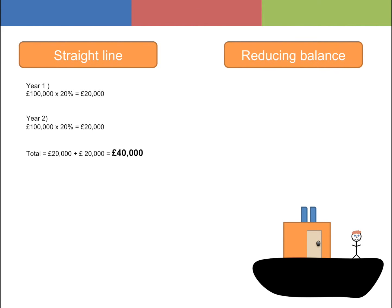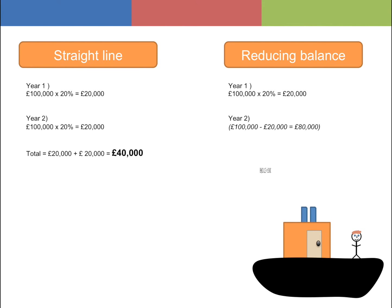However, for the reducing balance method, for the second year you would have to take your £100,000 minus the £20,000 depreciation in the first year, which gives you £80,000. You then take this £80,000 and times it by 20%, which gives you £16,000. You take the £20,000 plus the £16,000 which equals £36,000 total depreciation.